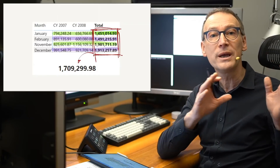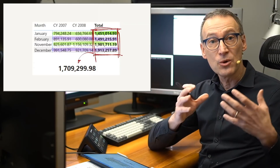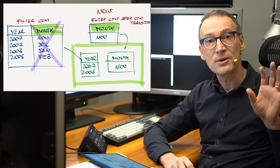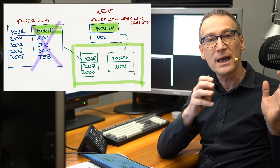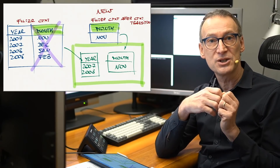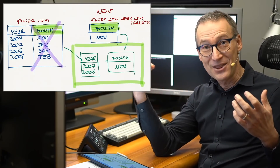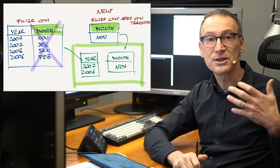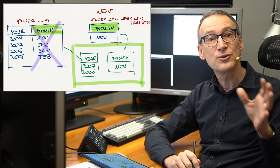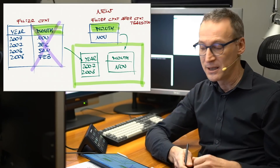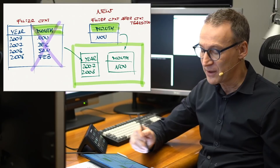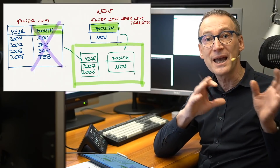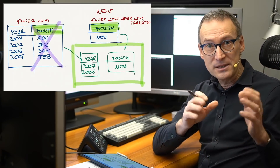What actually happens during the calculation is that the engine goes on the first month, say January, and computes the sum of 2007 and 2008 together. Then on each subsequent iteration it does the same. So the numbers being aggregated lead to an average of 1.7 million — that is the same wrong value we saw at the beginning. The problem is not DAX. The problem is that we started from an arbitrarily shaped set and when CALCULATE during context transition used the override operator to replace the month part of the old filter context, it destroyed the arbitrarily shaped set and transformed it into a regular set.